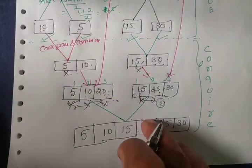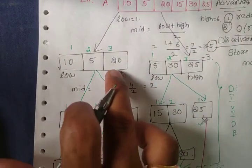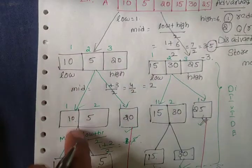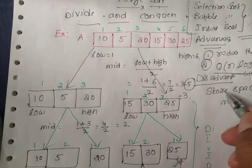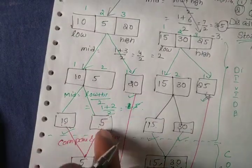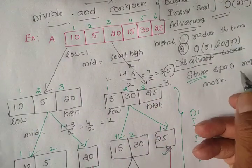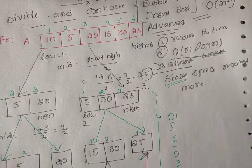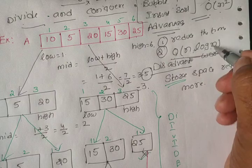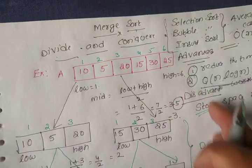This is the division part and this is the conquer part. For every division, mid = (low + high) / 2 is repeatedly calculated. Arrays are divided into sub-arrays, requiring more store space — that is the disadvantage. But the sorting process is very fast. In the worst case it is O(n log n). This is the concept of merge sort with its advantages and disadvantages.